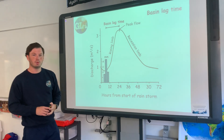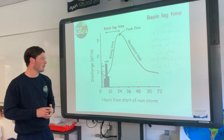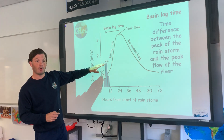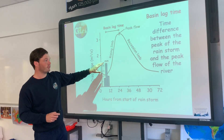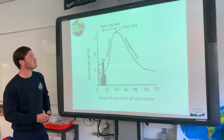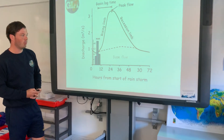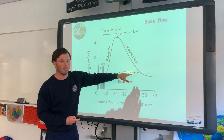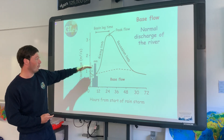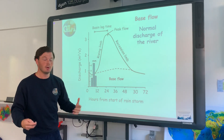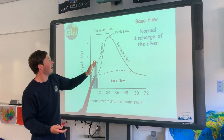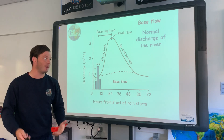We've got something called the basin lag time. The basin lag time is the difference between the peak of our rainstorm, which is shown in our bar chart, and the peak flow of the river. This is also where we usually see our base flow — the amount of water that would normally be flowing through a river. But obviously, once we have increased rainfall, that will lead to increased water in a river, increased discharge, and an increased chance of a flood.